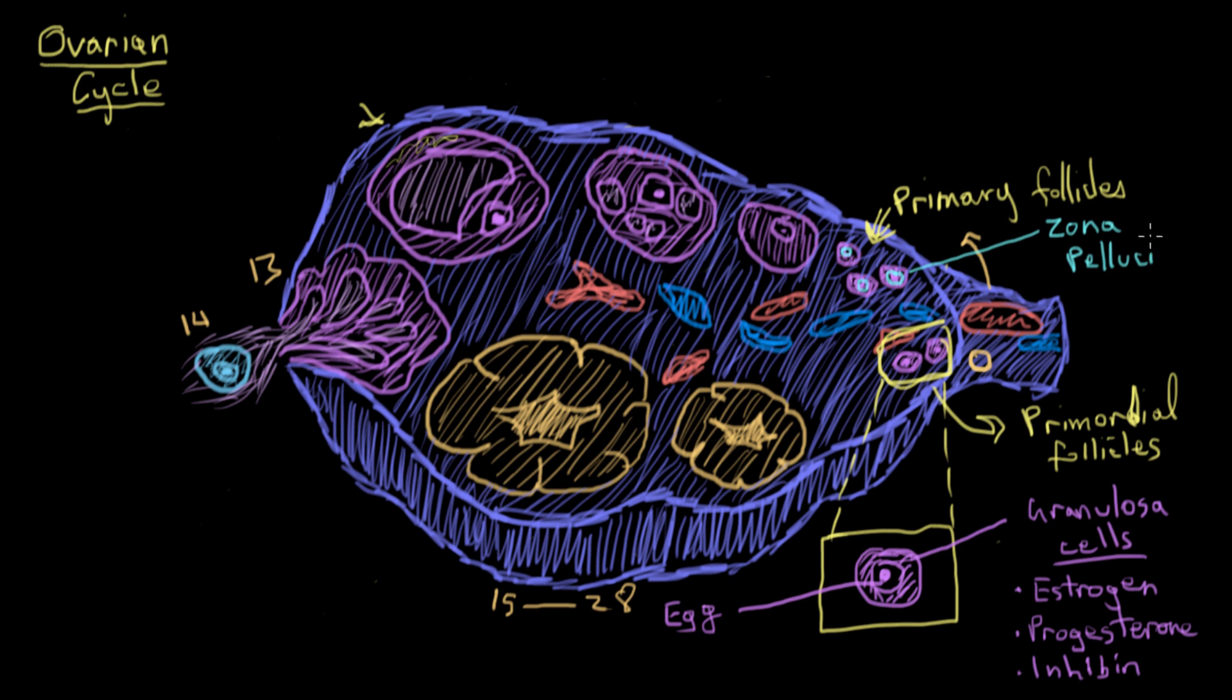And I'll draw it here in light blue. And even though the egg I've drawn in blue, there's still a layer of zona pellucida. Even though the egg is originally drawn in blue because I wanted to draw the egg in blue. There's still a layer of zona pellucida around it.